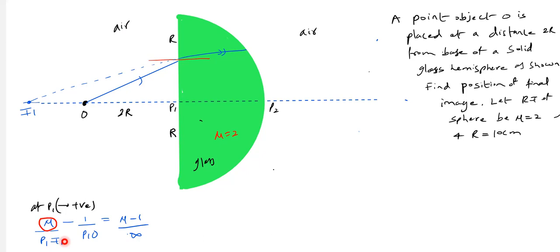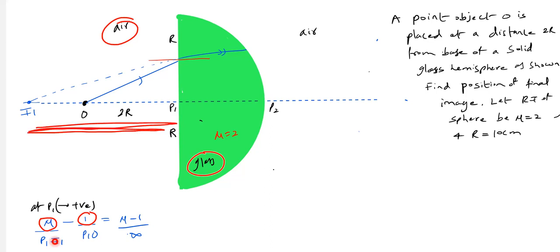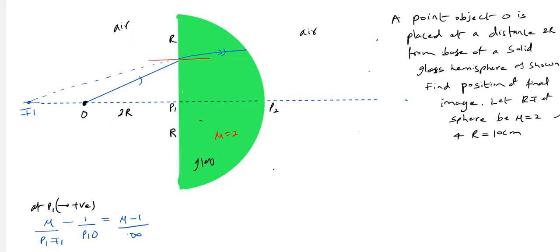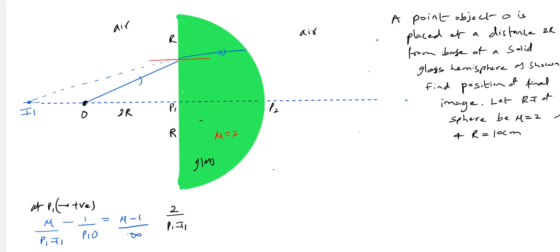Here mu is the refractive index of the glass, and 1 is the refractive index of air. P1·I1 is the image distance and P1·O is the object distance, which is 2r. Substituting: 2 / (P1·I1) minus 1 / (P1·O) = (2 minus 1) / infinity. Since 1/infinity equals zero, the right-hand side becomes zero.